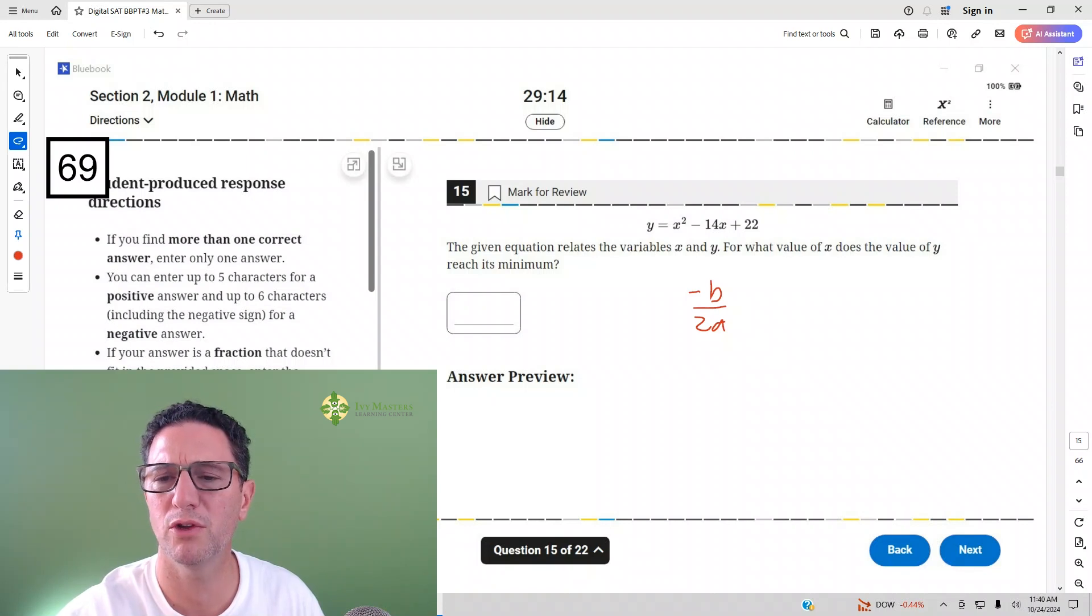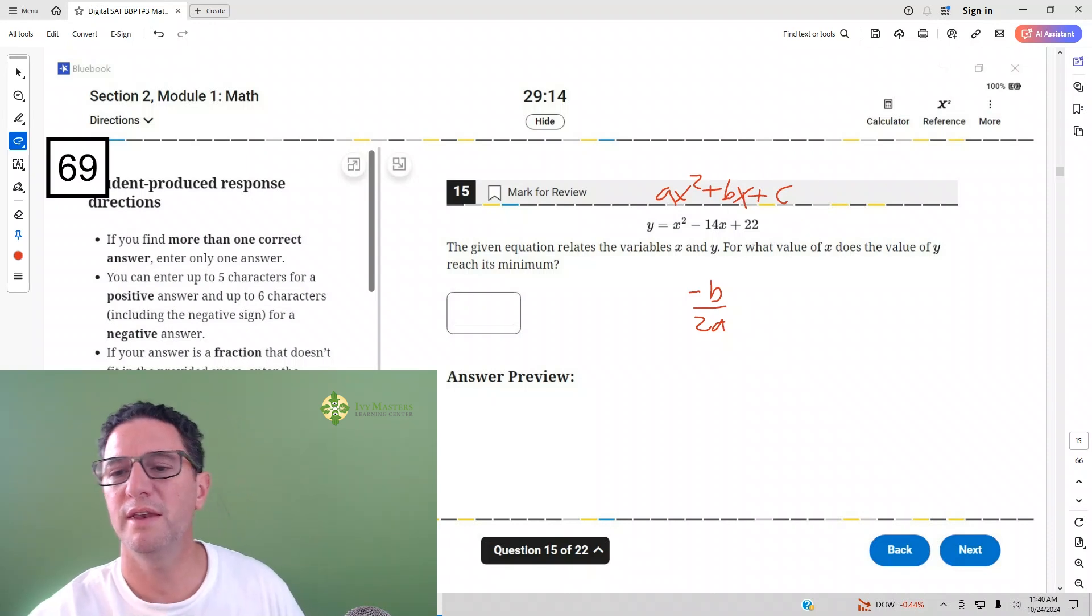What do you mean by negative B over 2A? When you're in the form AX squared plus BX plus C, then you can see that your A, there's nothing attached to the X squared. So how many X squareds do you have? If nothing attached to it, you have 1. So A equals 1. Notice what corresponds with B. Negative 14. B equals negative 14.